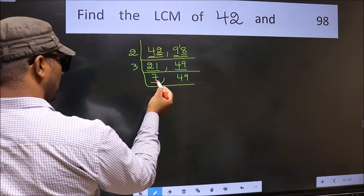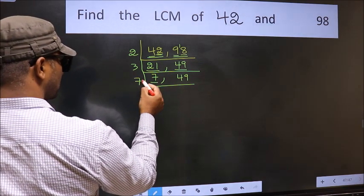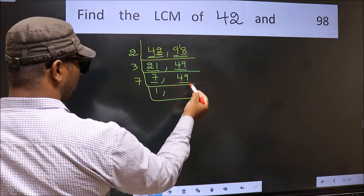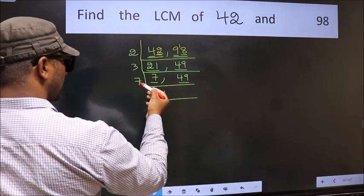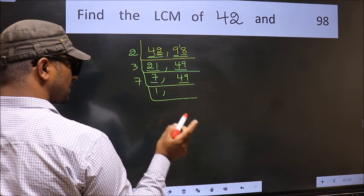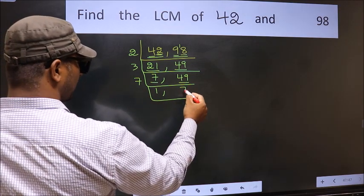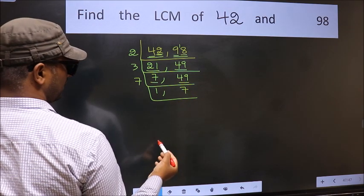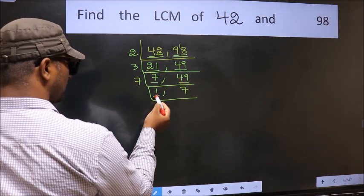Now here we have 7. 7 is a prime number, so 7 times 1 is 7. The other number 49. When do we get 49 in 7 table? 7 times 7 is 49. I repeat, 7 times 7 is 49.